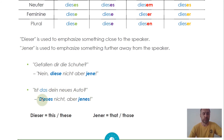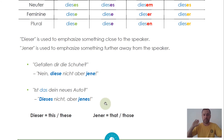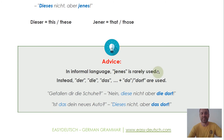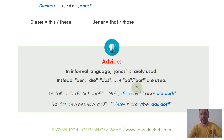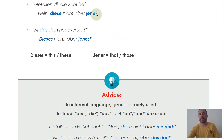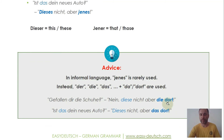For example: 'Ist das dein neues Auto? Dieses nicht, aber jenes.' — Is this your new car? Not this one, but that one over there. Note that 'jenes' is rarely used in modern German. If you really want to highlight that something is far away, you can use 'der/die/das' plus 'da' or 'dort': 'Gefallen dir diese Schuhe? Nein, diese nicht, aber die dort.' Or: 'Dieses nicht, aber das dort.' That's the more modern, informal way. The 'dieser/jener' form you'll still hear, but it's a bit more formal. The 'der/die/das + dort' version is the everyday normal way.